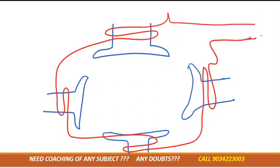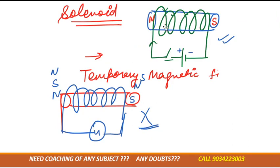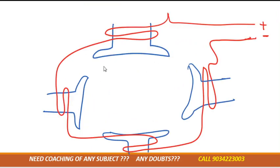Which supply should I give — AC or DC? DC, as I told you. We have used a temporary magnet. Suppose here north pole is generated, here south pole is generated, then north, south, north, south. This winding — where we wound wire — we take it as a winding. This winding is used for making the magnetic field, that's why it is known as magnetic field winding, or simply field winding.